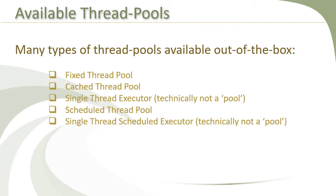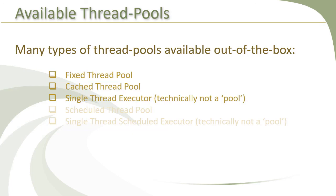As discussed already, there are many types of pre-configured thread pools provided by the JDK out of the box. In the upcoming lessons in this section, we will look at each of these thread pools in action one by one, except the scheduled executors, which we will look at in another section later. We will also see the classes depicted on the previous slide in action in the upcoming lessons. That's all on the topic of important classes and interfaces in the executor's framework. See you in the next lesson.